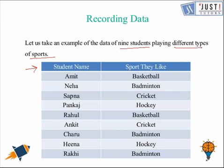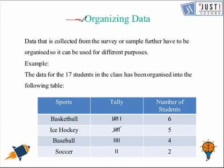After recording the data, we need to organize it in a way that makes it easy to analyze. We can organize the data by making three columns in a table. In the first column, we write the name of the sport. In the second column, we write tally marks. And in the third column, we write the number of students. This makes it easier to analyze the data.